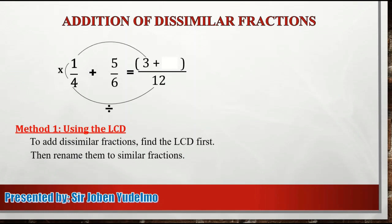Susulat natin ang sagot sa itaas ng ating fraction bar. And then, i-divide natin ulit ang 12 by the denominator of another fraction, which is 6. So 12 divided by 6 is equal to 2. Then, we are going to multiply the result with the numerator, which is 5. So 2 times 5, that's equal to 10. So at that point, similar fractions na yan sila.